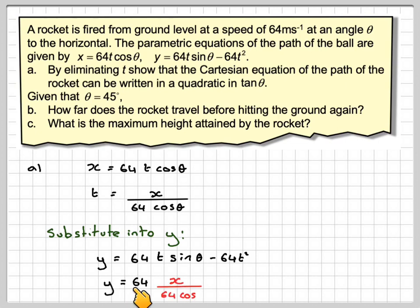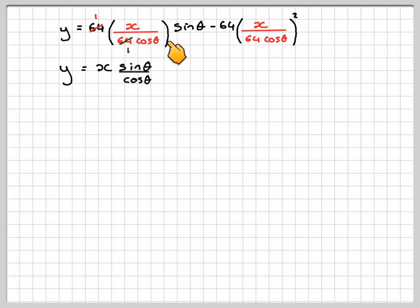Then we get y is 64 times x over 64 cos θ times sin θ minus 64 times x over 64 cos θ squared. Just writing that line out again so we can work with it. We can cancel out a 64 and a 64 here. So that gives me x sin θ over cos θ when we multiply this together.